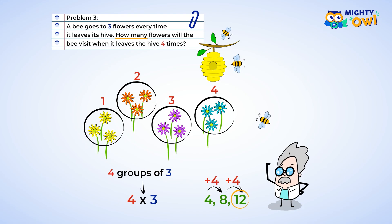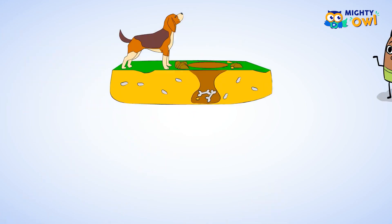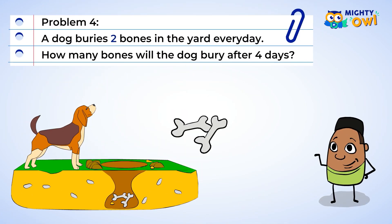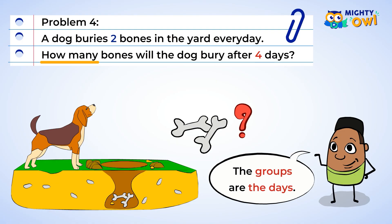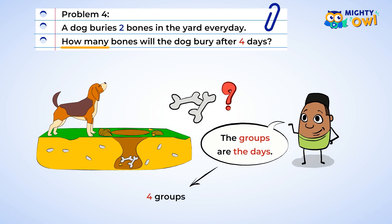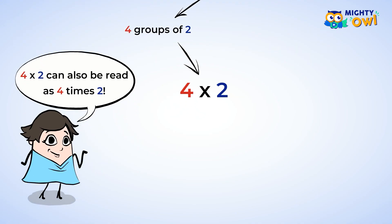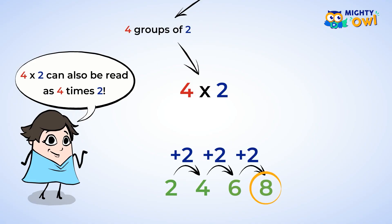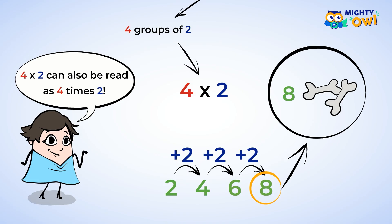You're on your way to mastering multiplication. Here's another one. A dog buries two bones in the yard every day. How many bones will the dog bury after four days? The groups in this problem are the days — there are four groups, four days, four groups. Each group has two bones, so you can say there are four groups of two bones. Now you can create a multiplication sentence: four multiplied by two. Now try skip counting to solve — two, four, six, eight. Eight bones are buried in the yard.